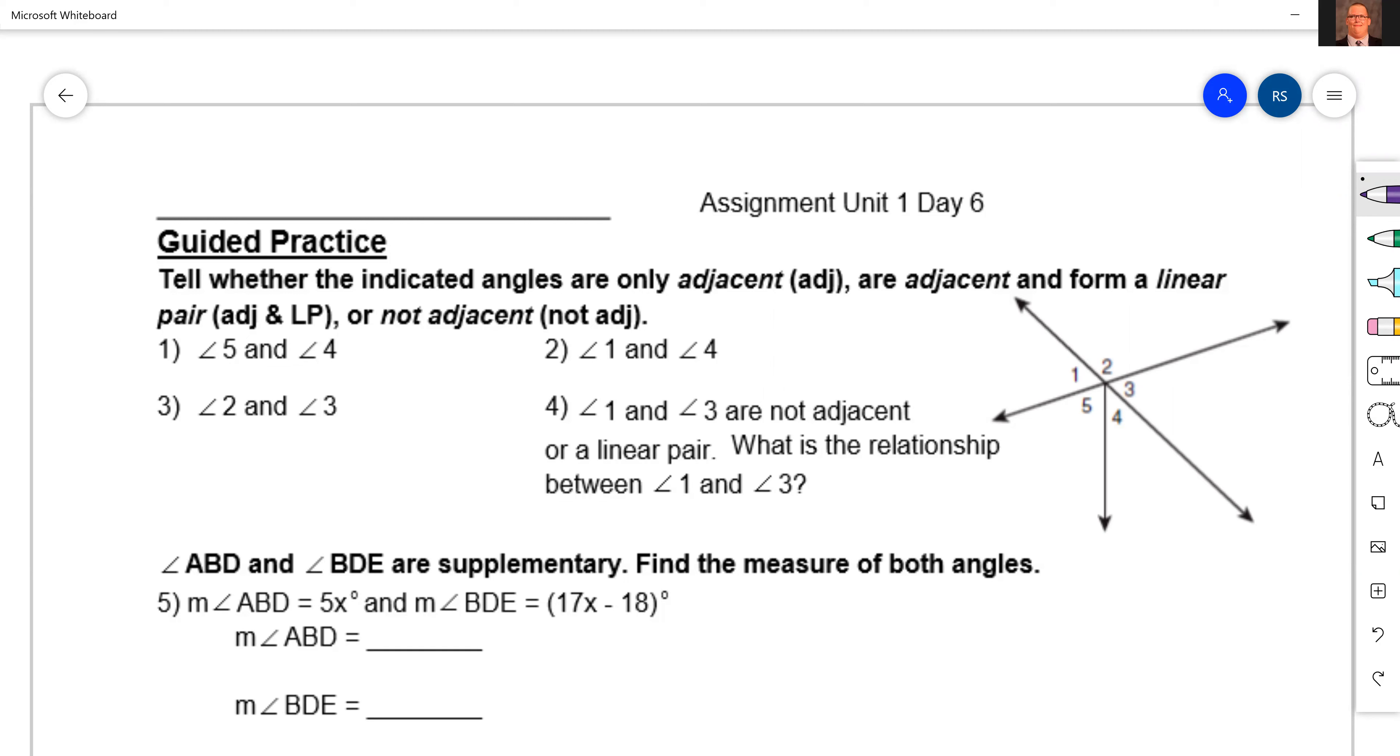For the first four, they say to tell whether or not the angles are only adjacent, adjacent and form a linear pair, or not adjacent at all. So let's get to it. As the saying goes, nothing to it the way we do it.